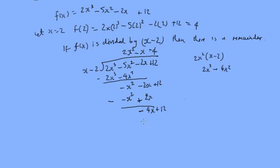Continuing the division, that gives us minus 4x. Minus 4 times minus 2 is plus 8, and that's all going to be subtracted, so that's going to be 0. 12 minus 8 is going to be 4, and that's our remainder.